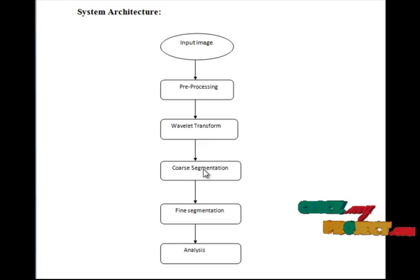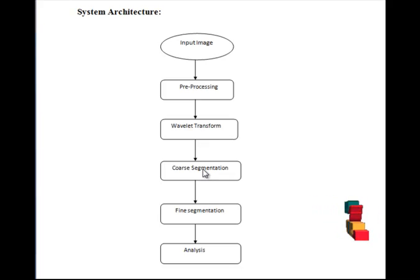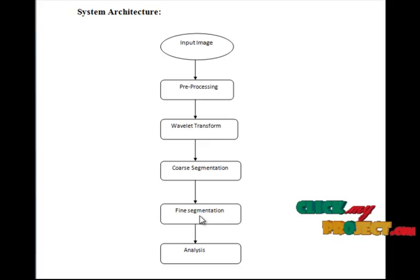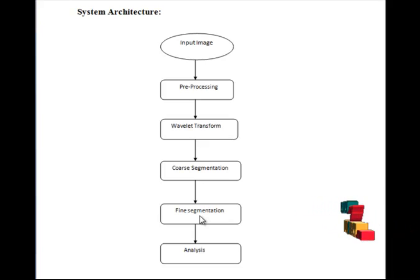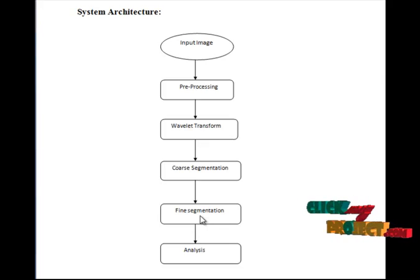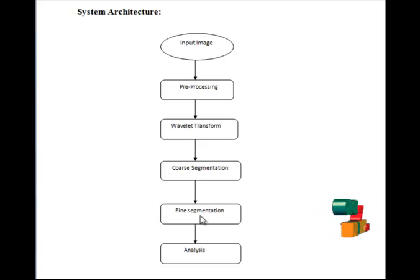Here, we get the coarse segmentation of the mammogram images. The segmented image is passed to the fine segmentation, where we use window-based adaptive threshold segmentation. Here, we segment the image in batches. From each batch, we find the mean value, which is considered as the threshold value. From this threshold value, we segment the lesions from the mammogram images.